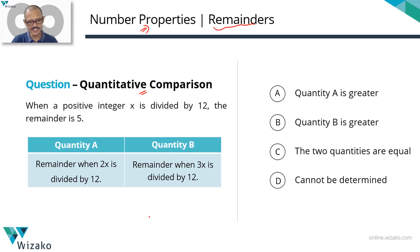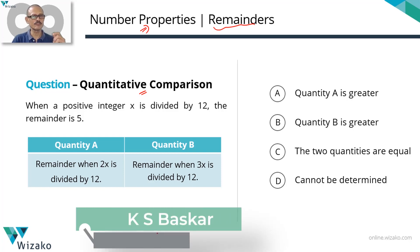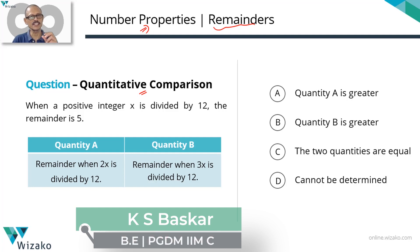When a positive integer x is divided by 12, the remainder obtained is 5. This entire question focuses on properties and key results of remainders.